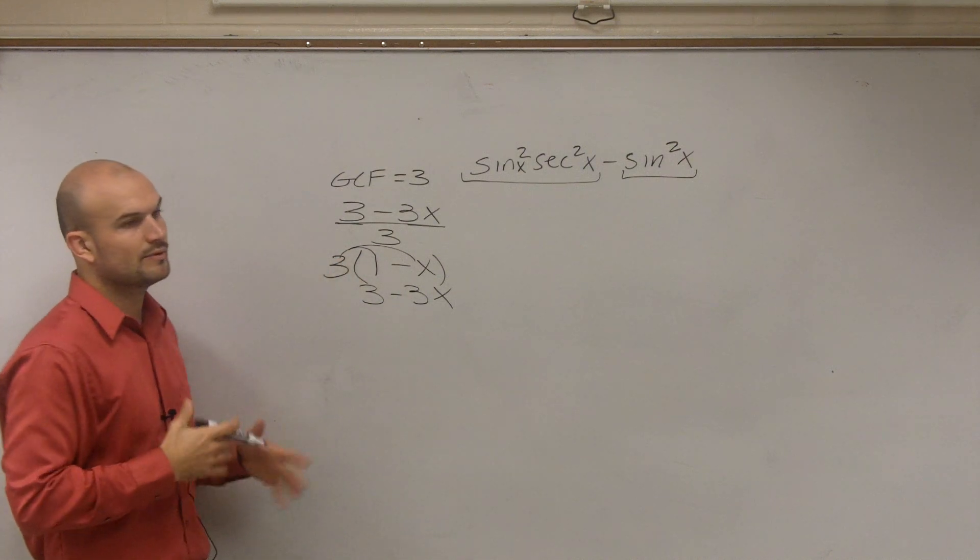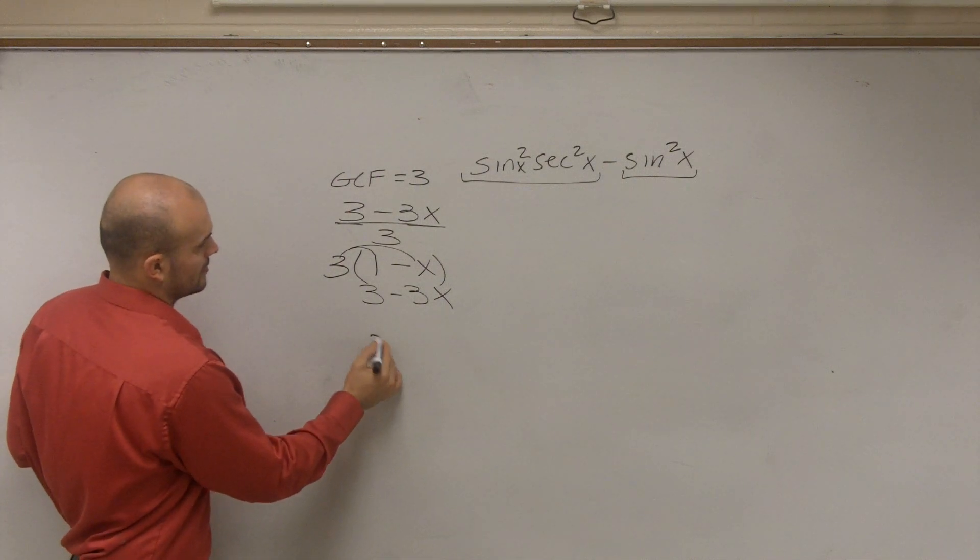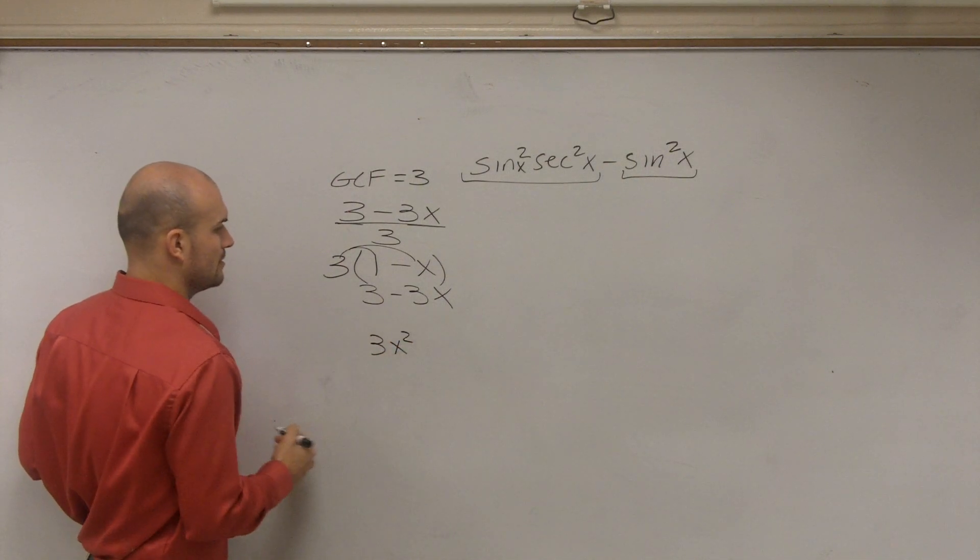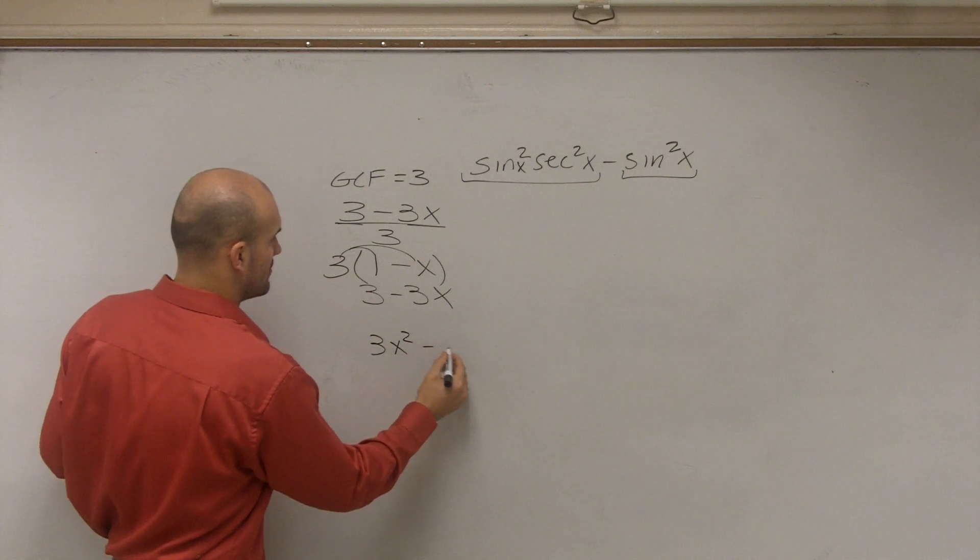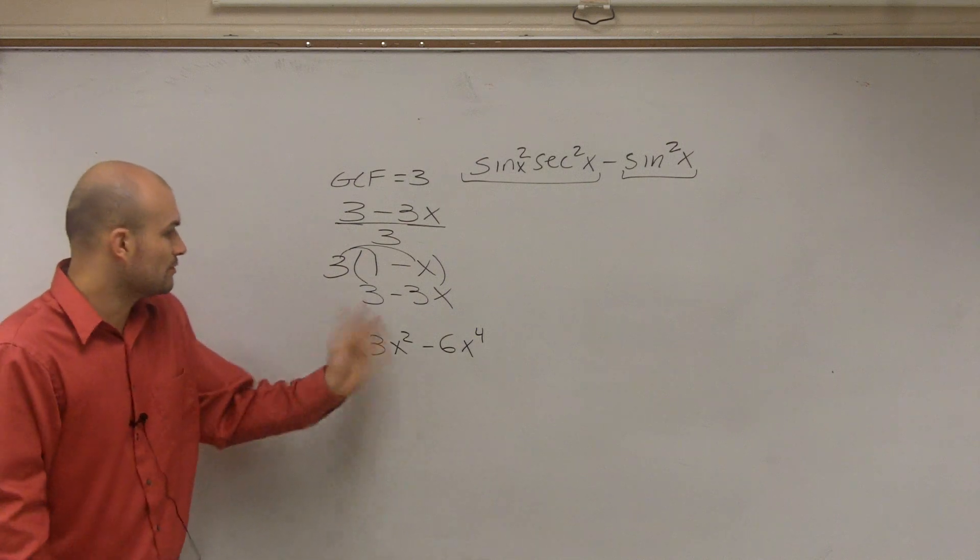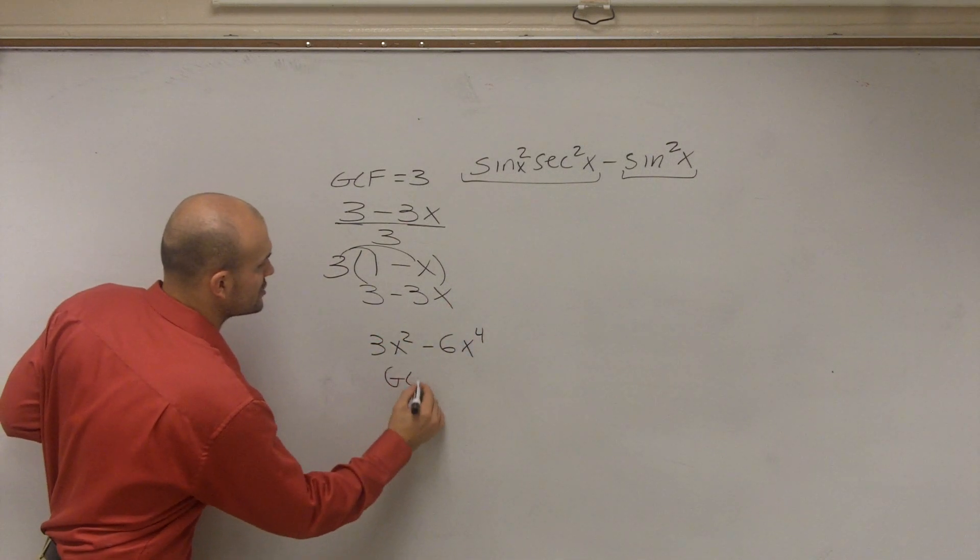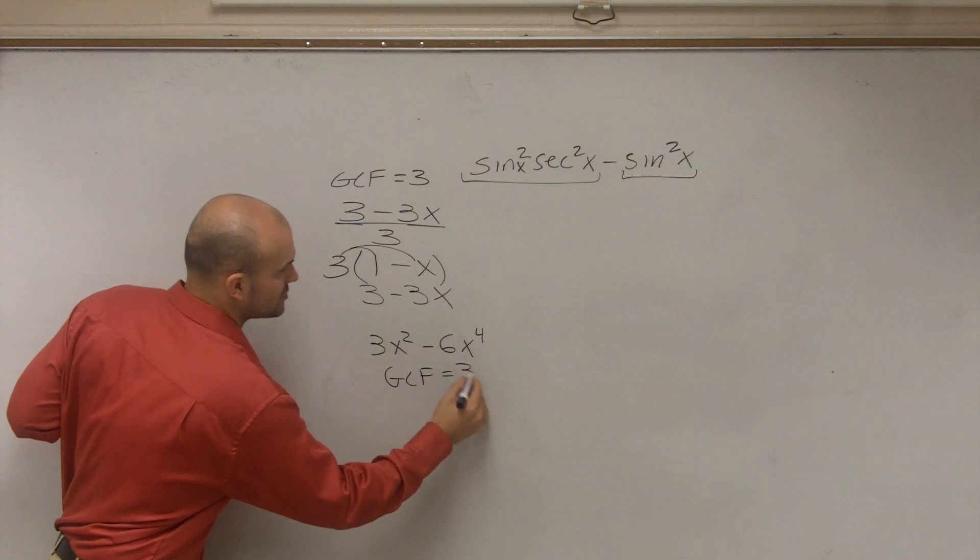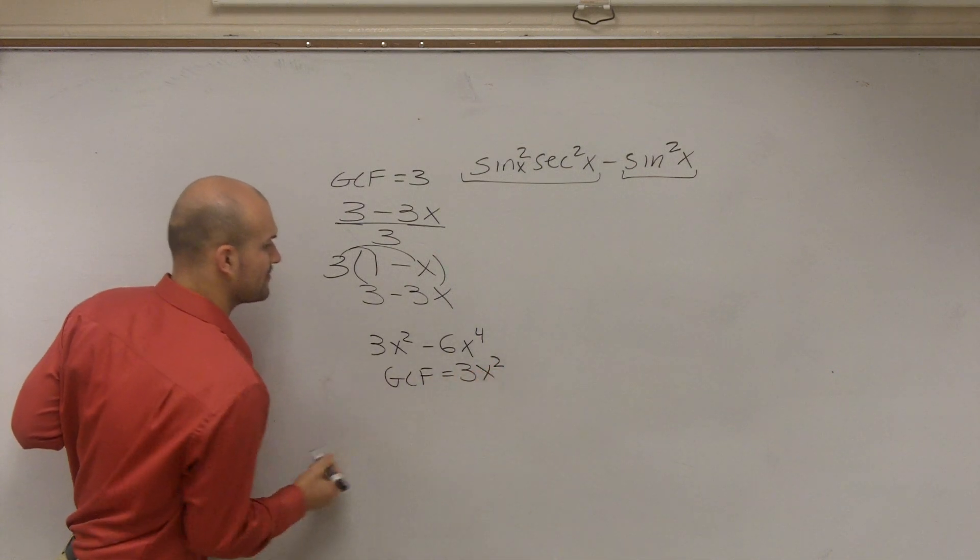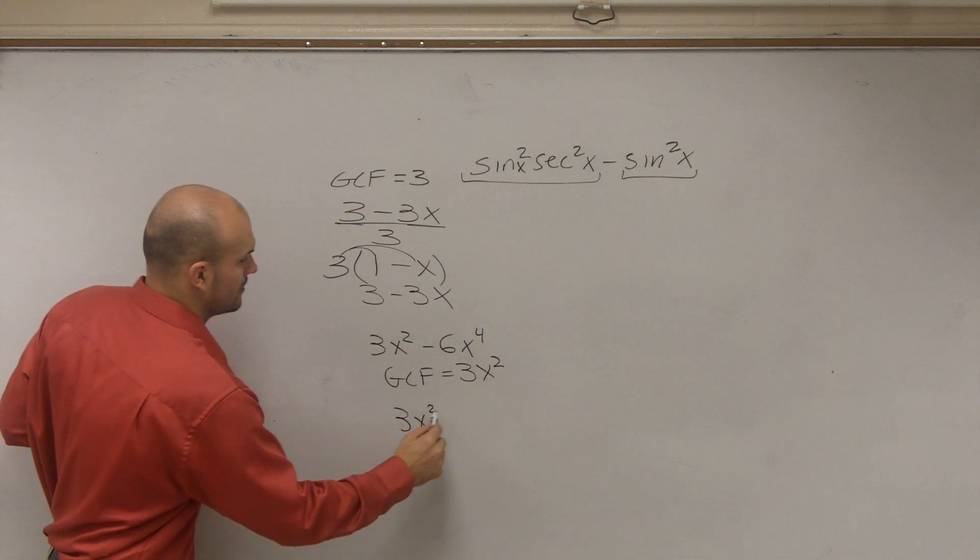Then the next thing we would do is maybe a little bit harder problem. You know, 3x squared, and then you could say minus 6x to the fourth. And you could say, what do they share in common? Well, they share a 3, and they share 3x squared. So you could say the GCF of this one equals 3x squared. So we divide each term by 3x squared.